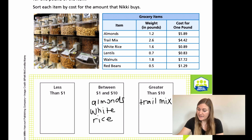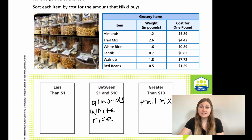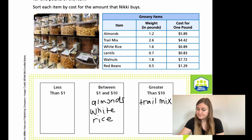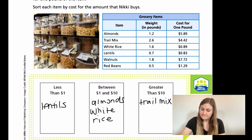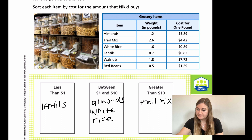Next is the lentils. We only have 0.7 pounds — not even a whole pound — which means it's just going to be a portion of the cost. The cost is $0.83, so we're having a portion of $0.83, which is pretty easily going to be less than $1. So we put the lentils in the less than $1 section.